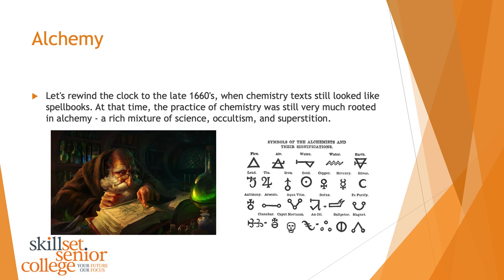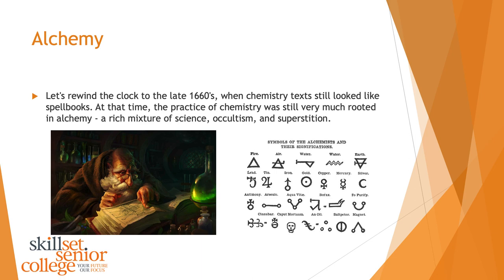As we always see in science, there's a progression of thought. As humans gained more information through trial and error and evidence, our understanding of the world increases and we change our theories over time — and one of those theories that changed significantly was phlogiston. There was a German alchemist named Johann Joachim Becker who outlined the theory of fundamentally flammable elements called terra pinguis. Substances that burned easily in air, like oils, waxes, and metals, were rich in terra pinguis, which was later called phlogiston.